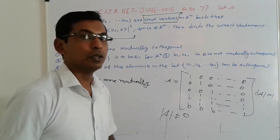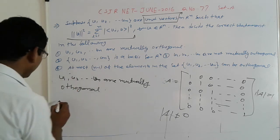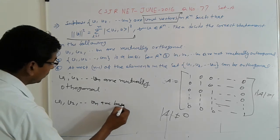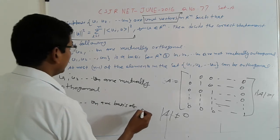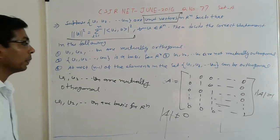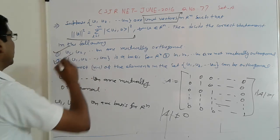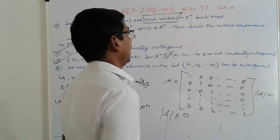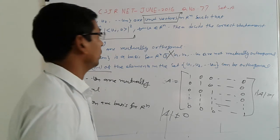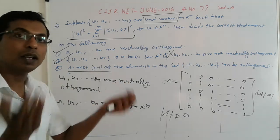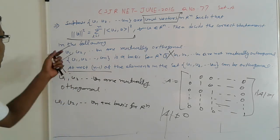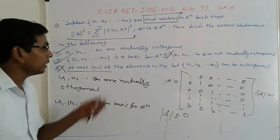So since determinant A is not equal to 0, it means V1, V2, ..., Vn are a basis — a basis for R^n. So they are mutually orthogonal and form a basis. At most n minus 1 elements in the set can also be orthogonal — not all elements here are orthogonal to everything. So that answer is also no. Therefore the first and second answers are correct.